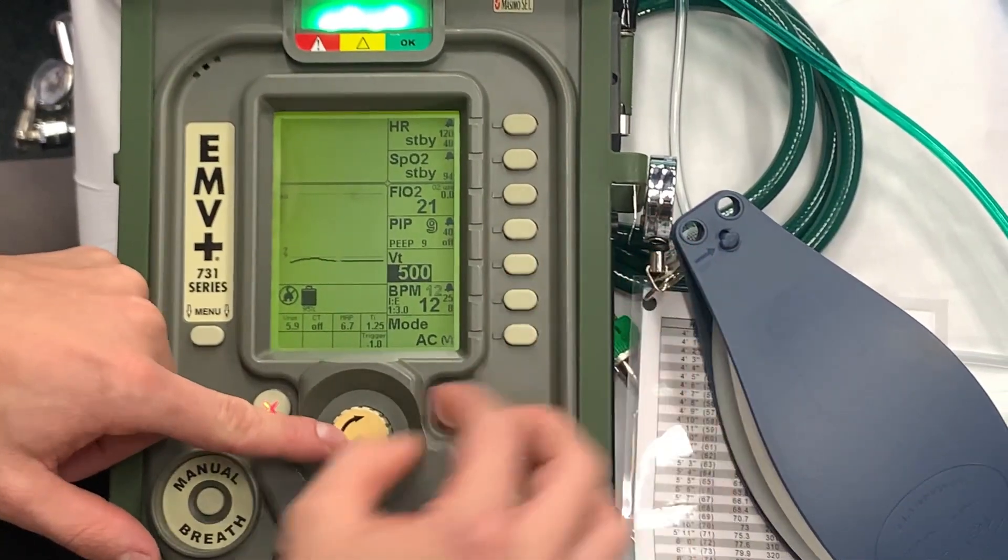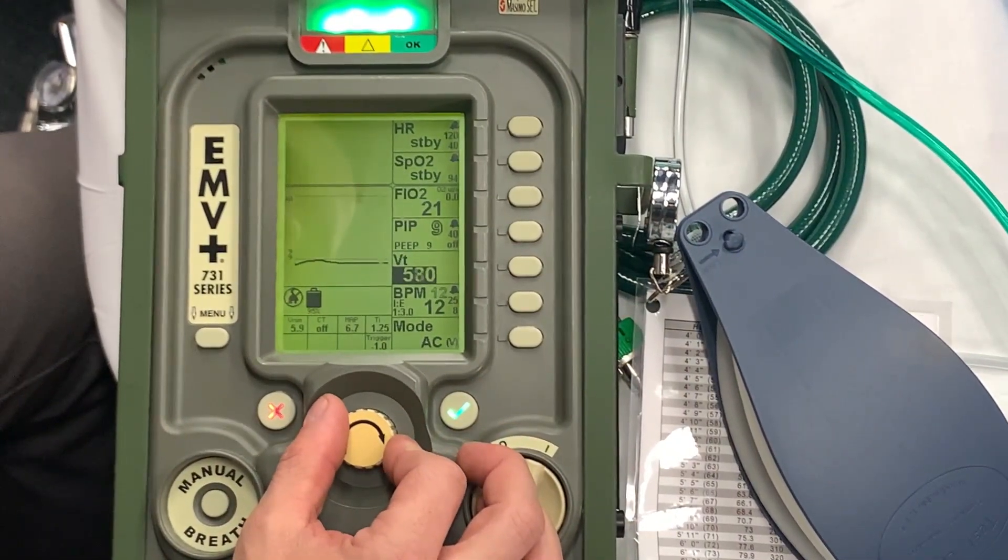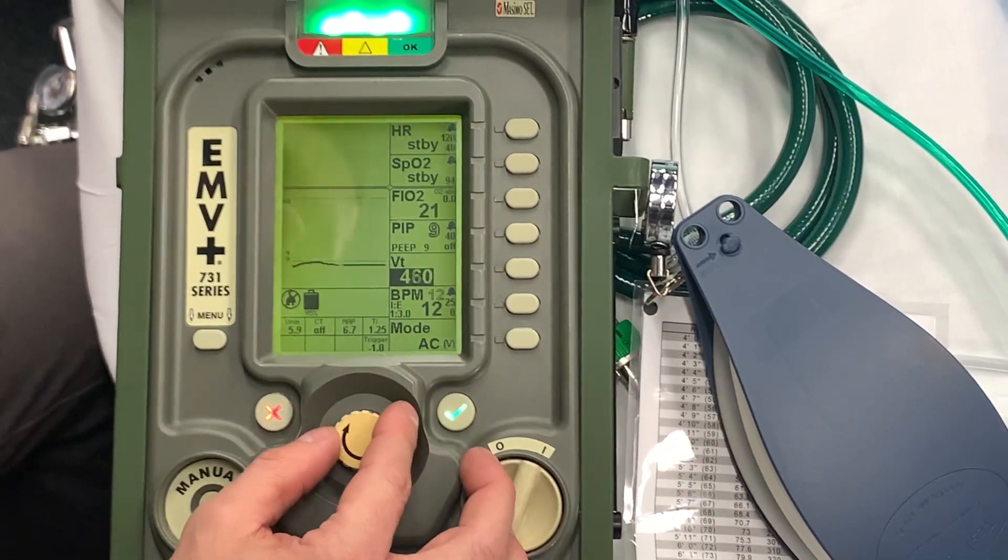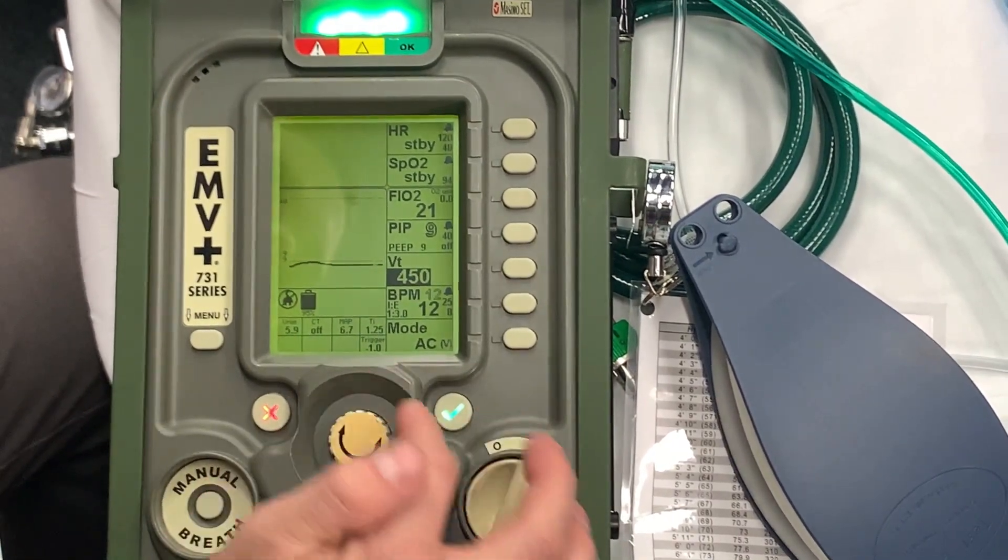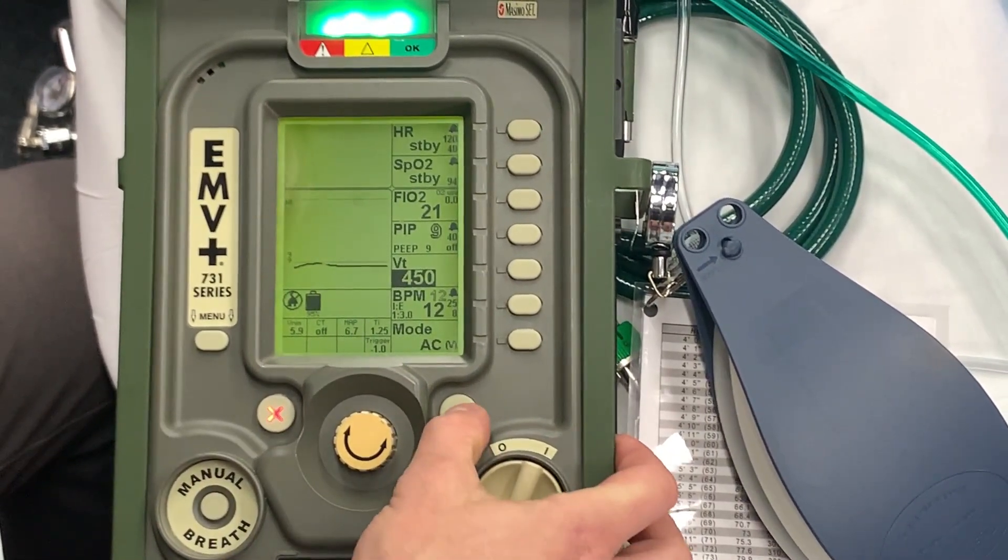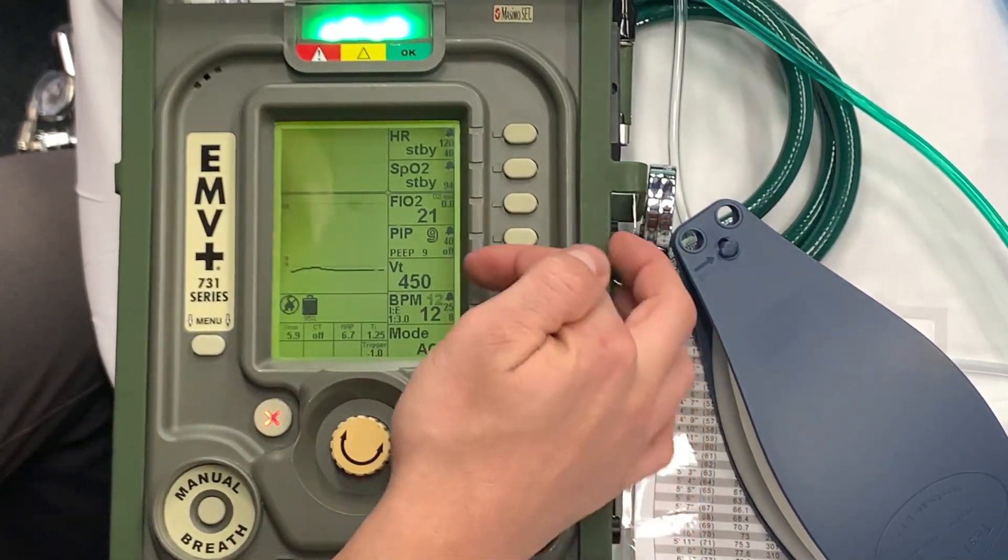There's only one selector knob. So I can go up and down. If I want to do a tidal volume of 450, select 450, and then I have to confirm it with the green knob here. So you can see that 450 is now selected.